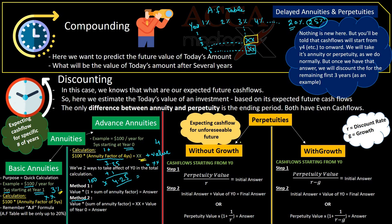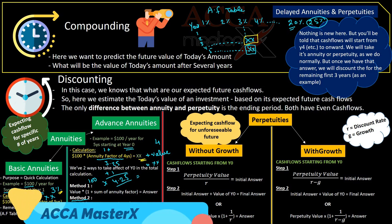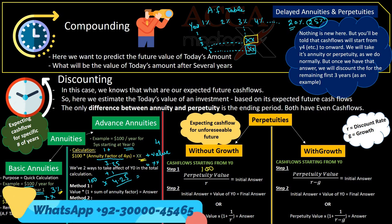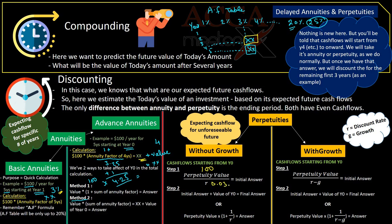For perpetuities, we are expecting to receive cash flows for the infinite future, either without growth or with growth — for example, an increment of 10% each year. If we expect to receive $100 each year and the discount rate is 3%, we write 100 divided by 0.03. To add the year zero value, we can either add it directly or use the formula. For perpetuities with growth, the only difference is we subtract the growth rate from the discount rate.